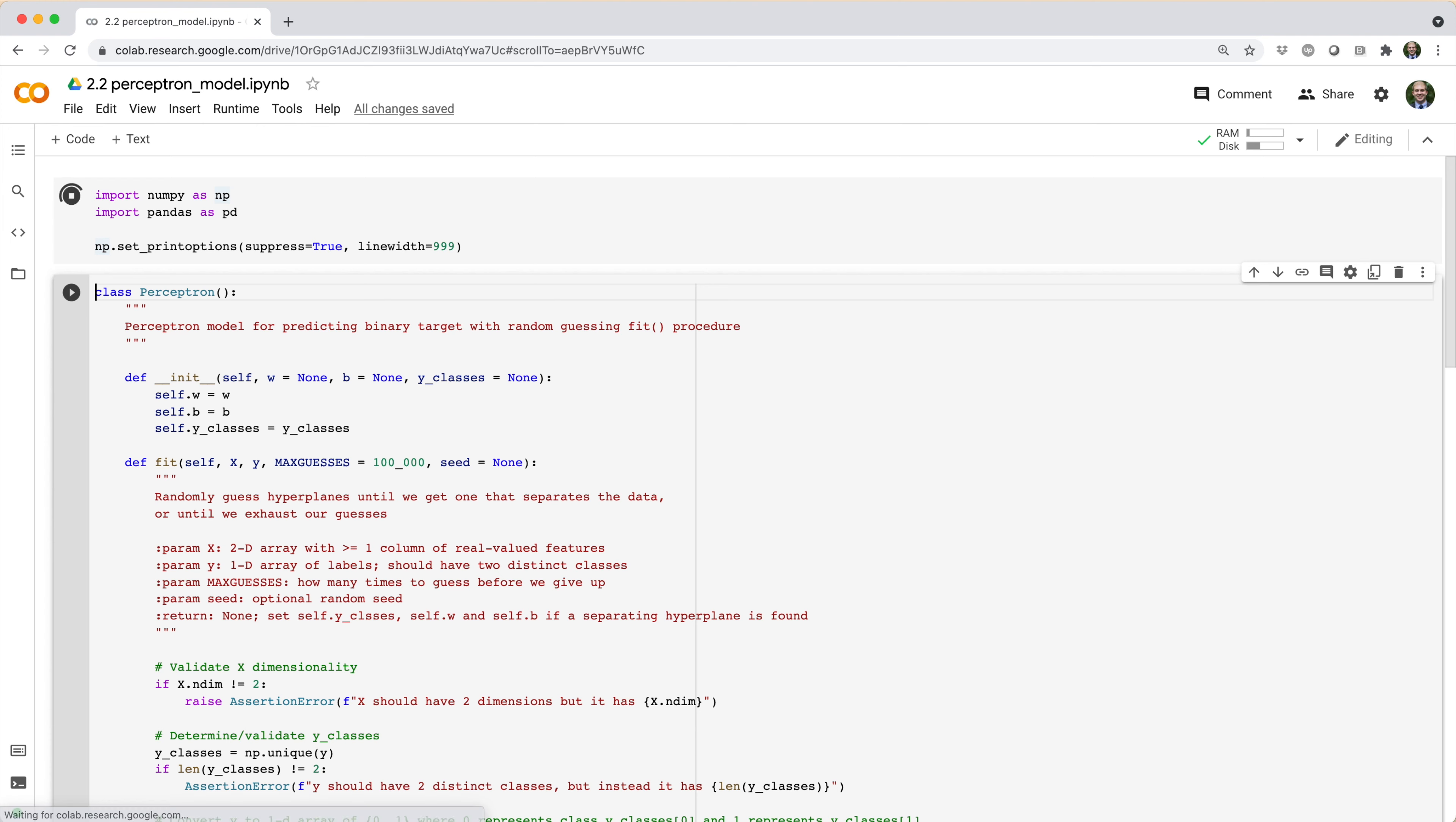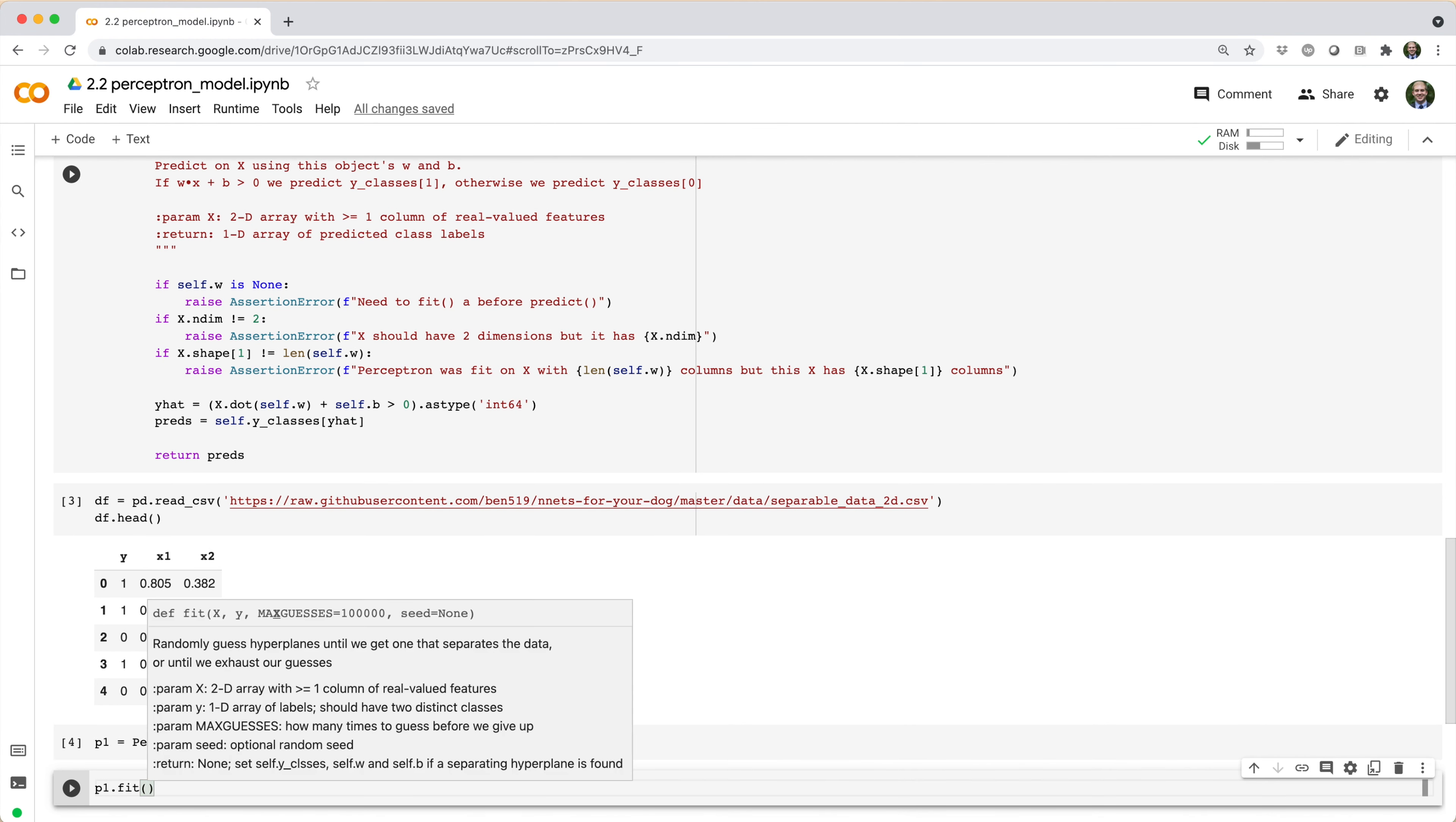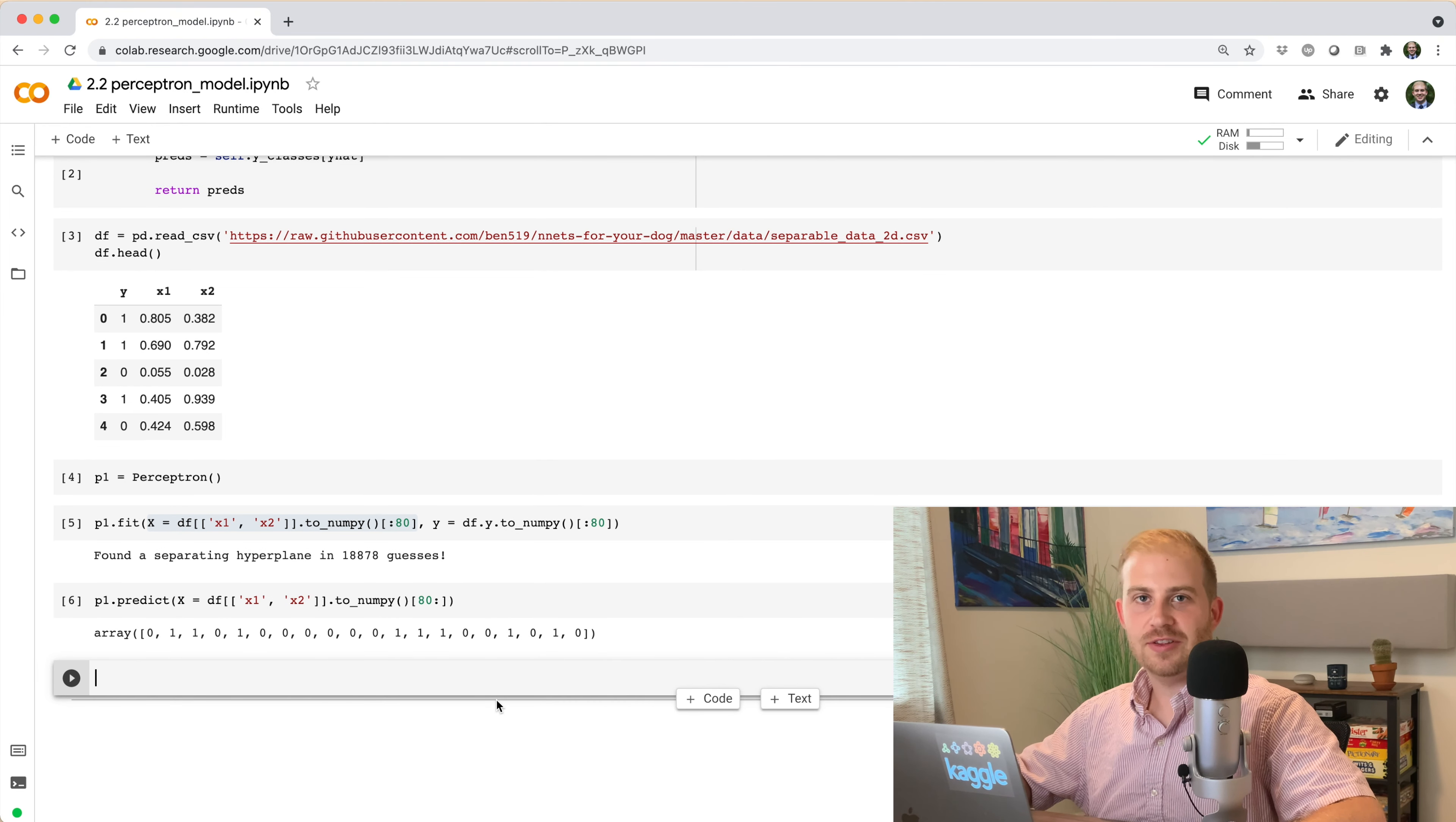Let's see this puppy in action. We'll start by reading some data into a data frame called df. Then we'll initialize a new perceptron object. Then we'll fit the perceptron to the first 80 rows of the data. And then we can use the fitted perceptron to predict on the last 20 rows of the data. Take some time to study this code, because we're going to be refactoring it in the next section.